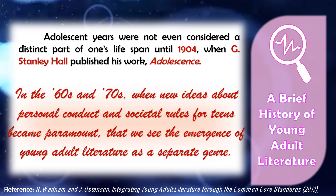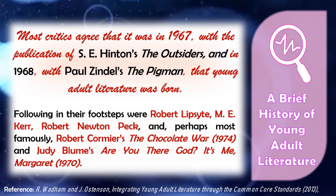society not only accepted the idea of adolescence, but began to see this age group as one with distinct characteristics and needs. So it was, then, in the 60s and 70s, when new ideas about personal conduct and societal rules for teens became paramount, that we see the emergence of young adult literature as a separate genre. Most critics agree that it was in 1967 with the publication of S.E. Hinton's The Outsiders,